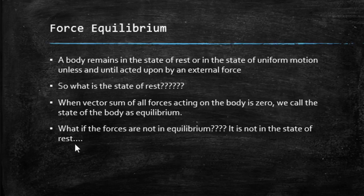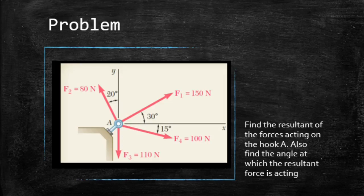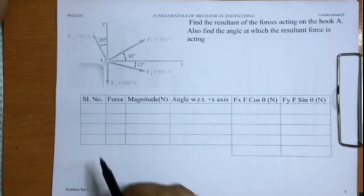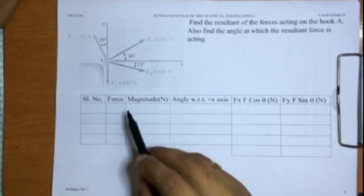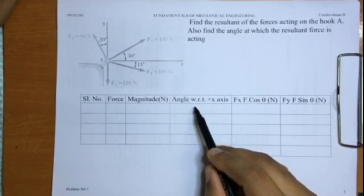So with this, let us try solving one problem. Let us consider this problem: Find the resultant of the forces acting on the hook A. Also find the angle at which the resultant force is acting.